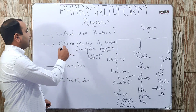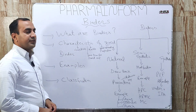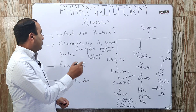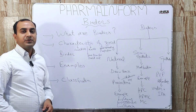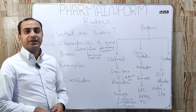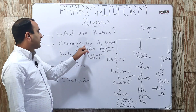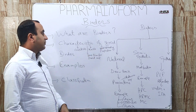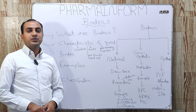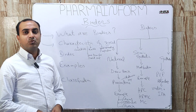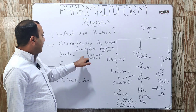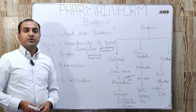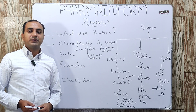They can also be used in dry form, and later we can use any solvent to activate these binders. What are the characteristics of a good binder? A good binder must be compatible with all the other excipients and the API of the formulation. It must be easily available. In the case of wet granulation, the binding solution prepared must have good spreading properties, and in the case of direct compression, the binder used must have good flow properties, like Avicel.